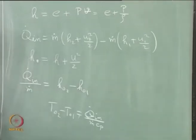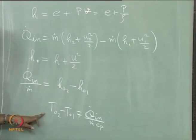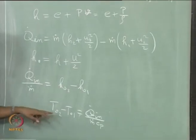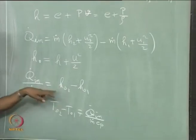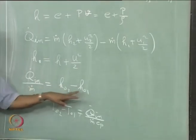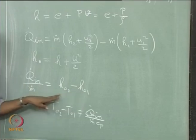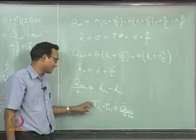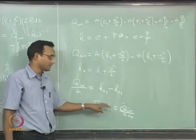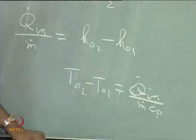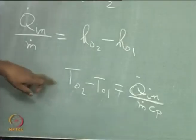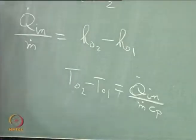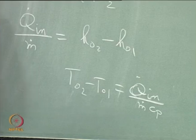This expression can be written for a calorically perfect gas. If I assume CP is constant for any temperature, I can pull CP outside and get CP(T₀₂ − T₀₁), where T₀ are the stagnation temperatures. We will keep it like this and go for more explanation later.